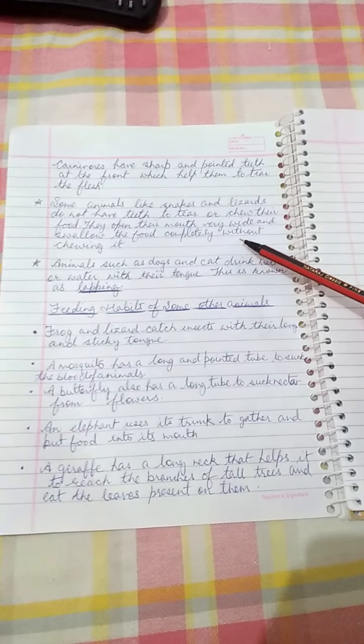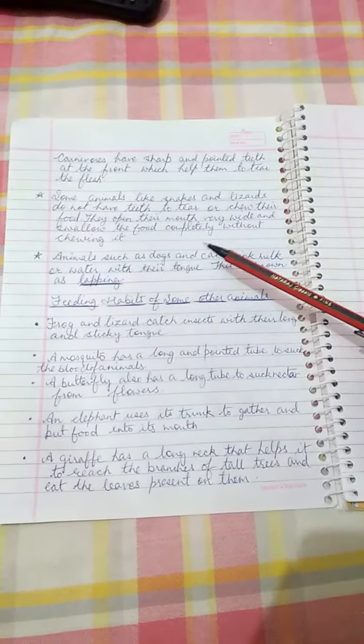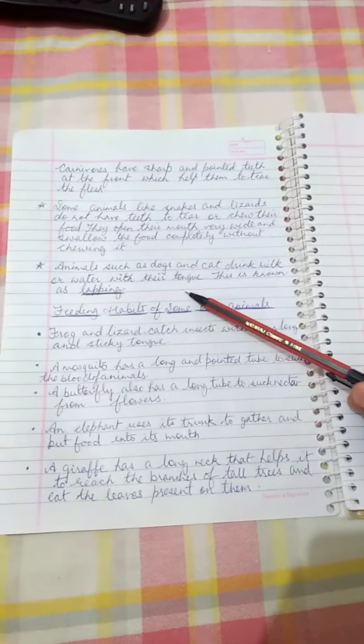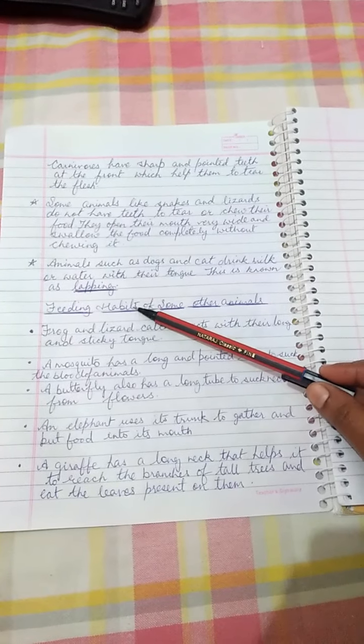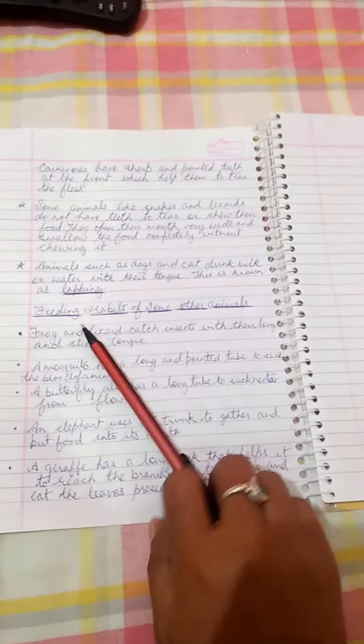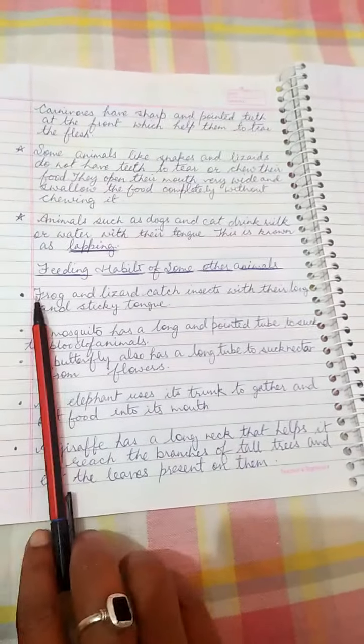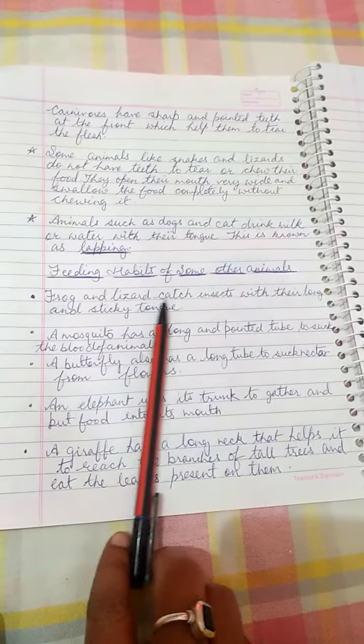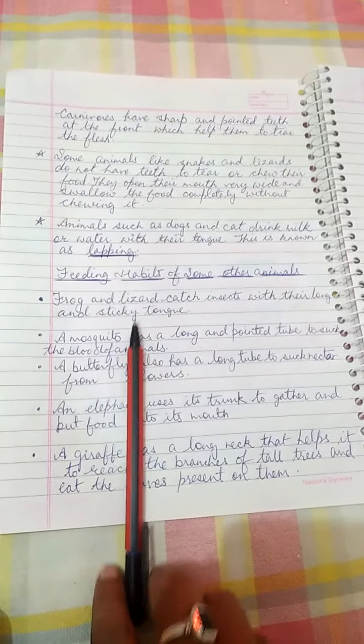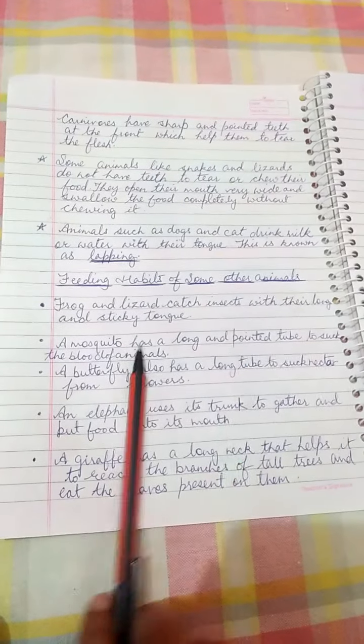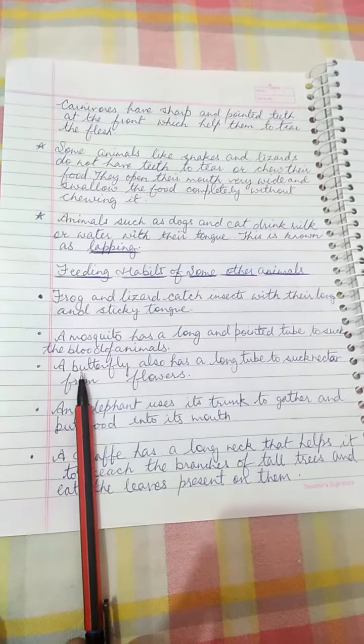Animals such as dogs and cats drink milk or water with their tongue. This is known as lapping. Now, some feeding habits of other animals: frog and lizard catch insects with their long and sticky tongue. A mosquito has a long and pointed tube to suck the blood of animals. Butterfly also has a long tube to suck nectar from flowers.